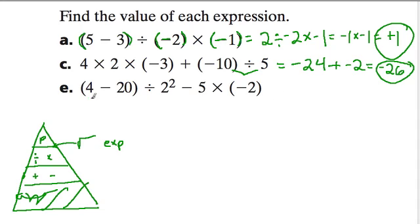And last here, the parentheses comes first. 4 minus 20, negative 16. There's nothing to do with these parentheses. We'll leave that alone. But there are exponents. 2 to the second means 2 times 2, which is 4. So negative 16 divided by 4 minus 5 times negative 2.